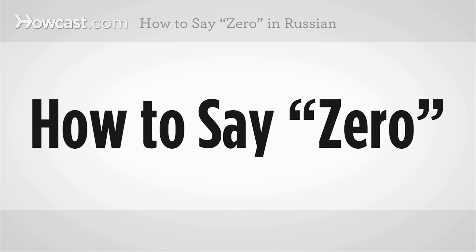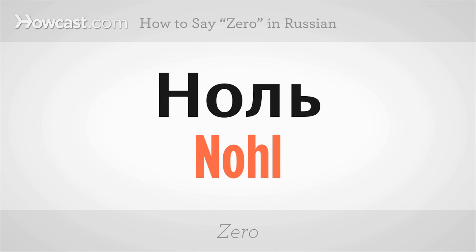How to say zero in Russian. The most basic translation for that would be нол. One more time, nice and slow: нол. It sounds similar to 'null', but it's a little bit different. Нол.